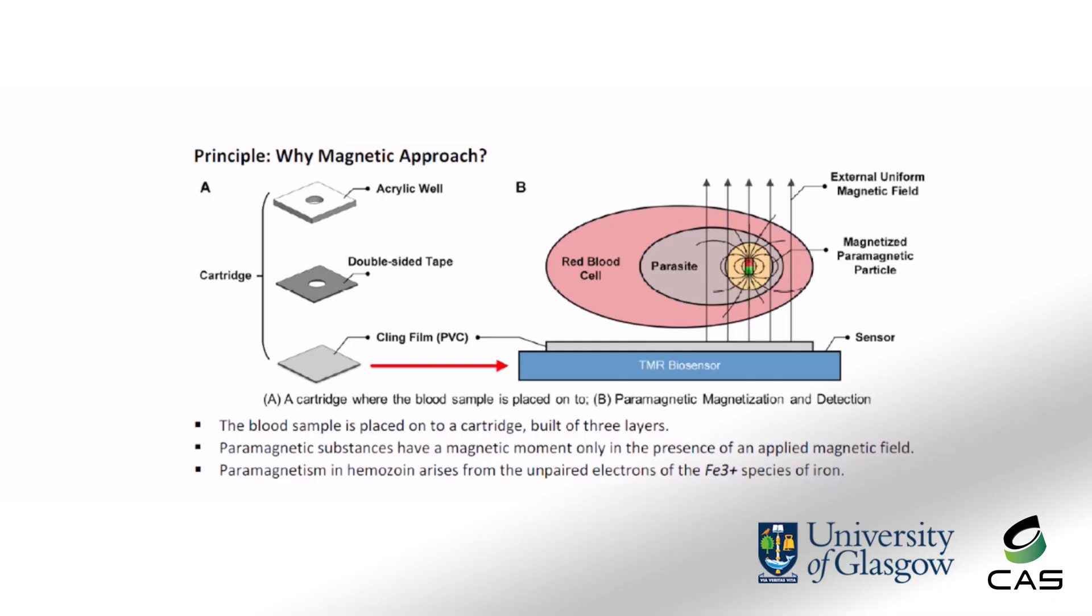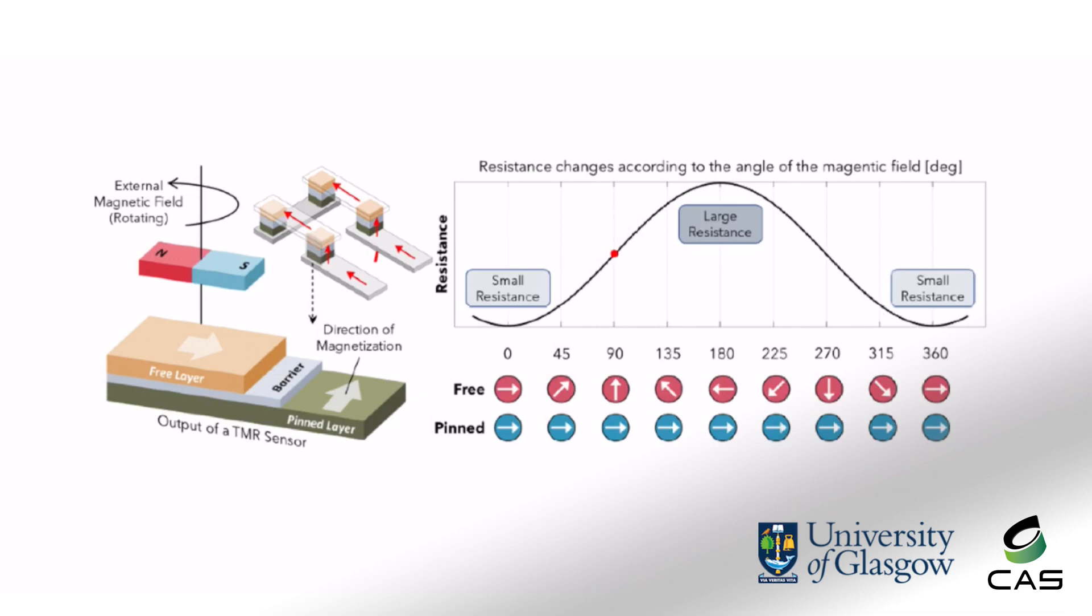The reason for choosing a magnetic approach is that as a parasite digests the hemoglobin, it creates heme as a by-product which is paramagnetic. The paramagnetic particle itself is not a magnet and cannot produce a magnetic field. However, when an external magnetic field exists around the particle, it will become a magnet producing an in-plane magnetic field which can be sensed by the TMR biosensor.